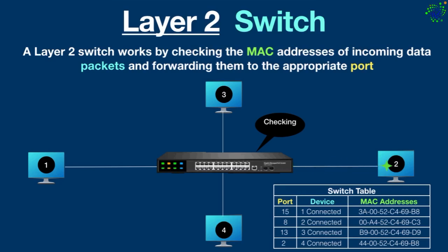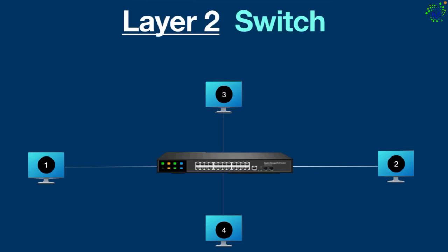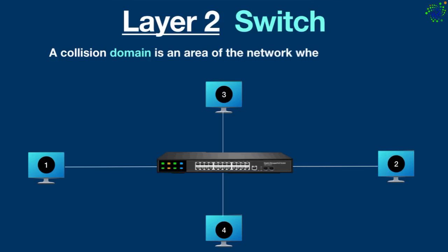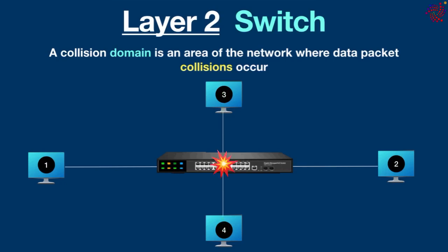It is also important to note that a layer 2 switch creates a dedicated connection between two devices, reducing collision domains and enhancing network performance. A collision domain is an area of the network where data packet collisions can occur — for example, when two devices on a shared segment send a packet at the same time, both must resend their packets, reducing efficiency. However, one downside of layer 2 switches is that they lack routing capabilities. Layer 2 switches are the most common type and are widely used in homes and small offices.